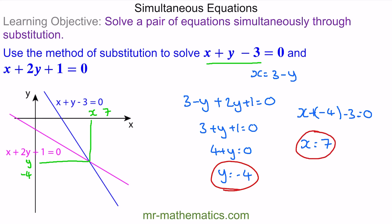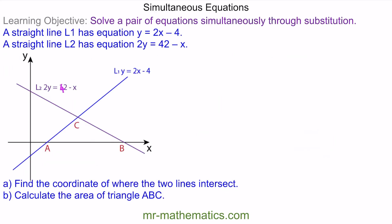Let's try one more question. Here we have an exam style question where we've been given the line y equals 2x minus 4 and the line L2, 2y equals 42 minus x. We've been asked to work out the coordinate C and then the area of triangle ABC.